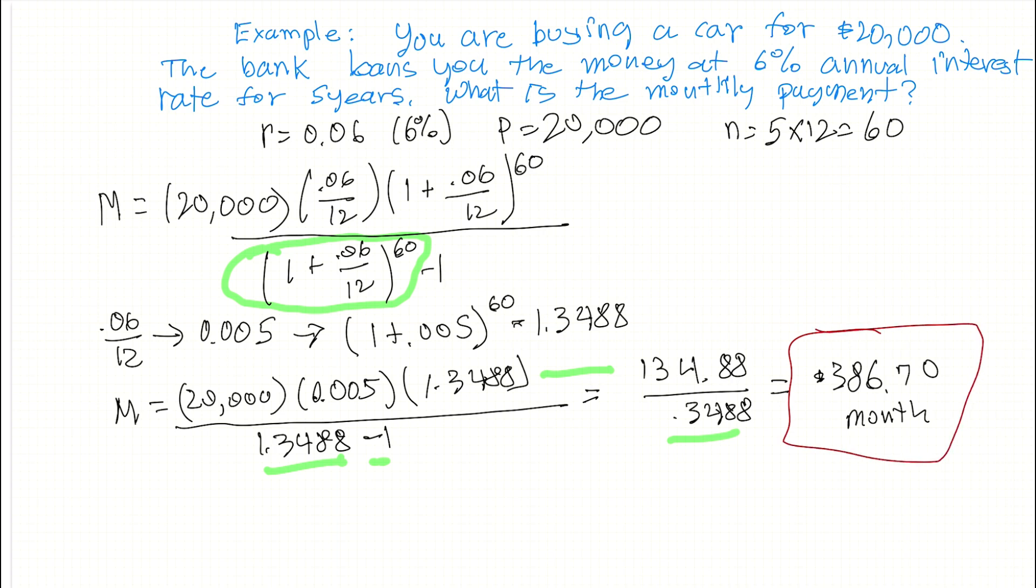So that's going to be our answer. So if we're going to borrow $20,000, and we're going to borrow at 6% for five years, then this is going to be our monthly payment. Roughly $387 is what we're going to need to come up with.